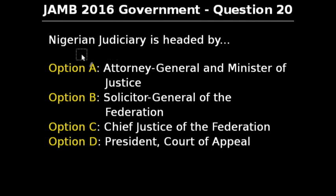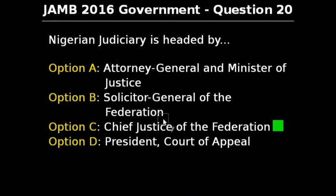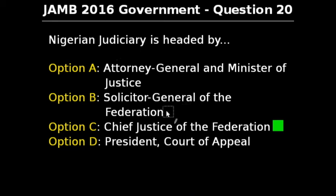Question 20 of JAM 2016 government exam says: the Nigerian judiciary is headed by — option A: Attorney General and Minister of Justice, option B: Solicitor General of the Federation, option C: Chief Justice of the Federation, option D: President of the Court of Appeal. The correct answer is option C, Chief Justice of the Federation. The Chief Justice of Nigeria is the head of the judicial arm of government, presides over the Supreme Court and the National Judicial Council. The Chief Justice is nominated by the President upon recommendation by the National Judicial Council and confirmed by the Senate.